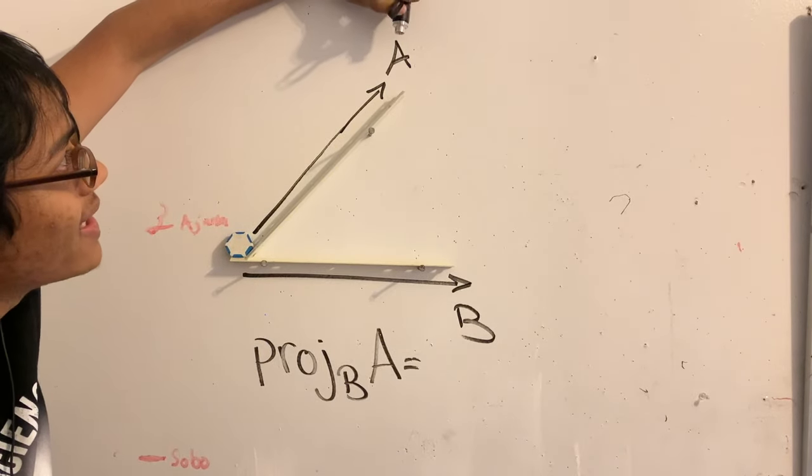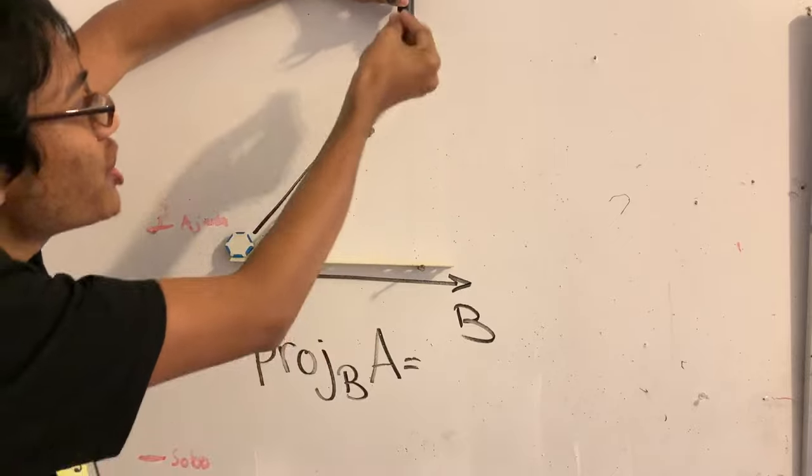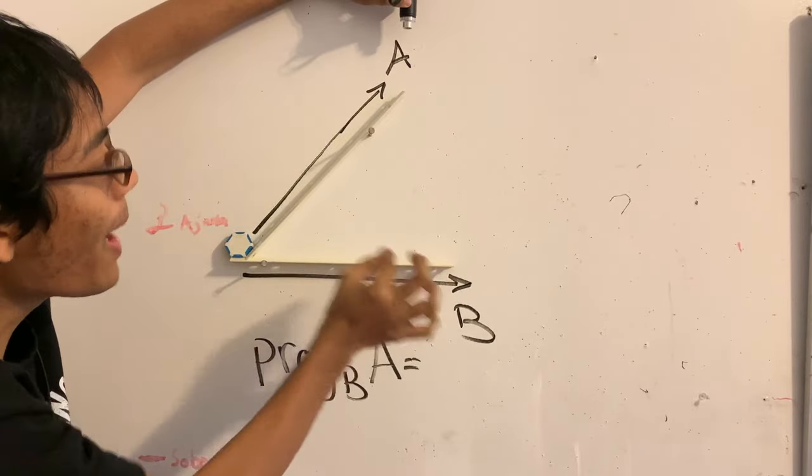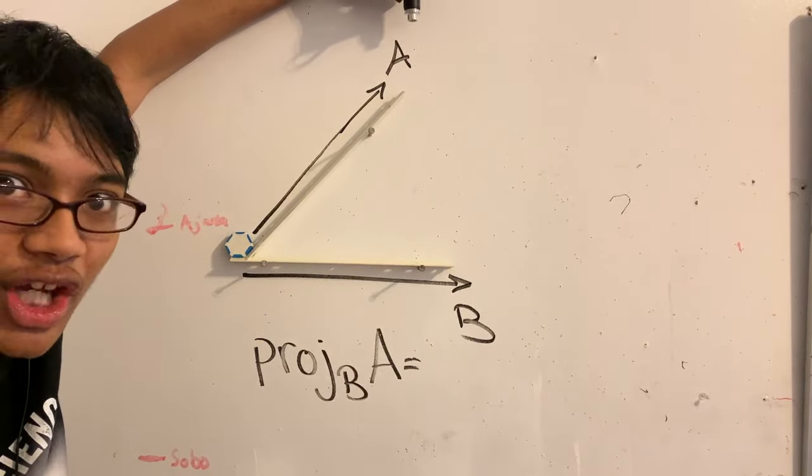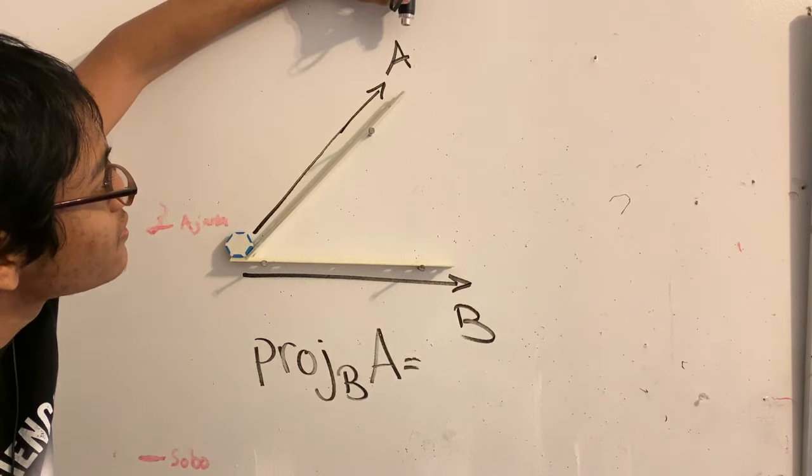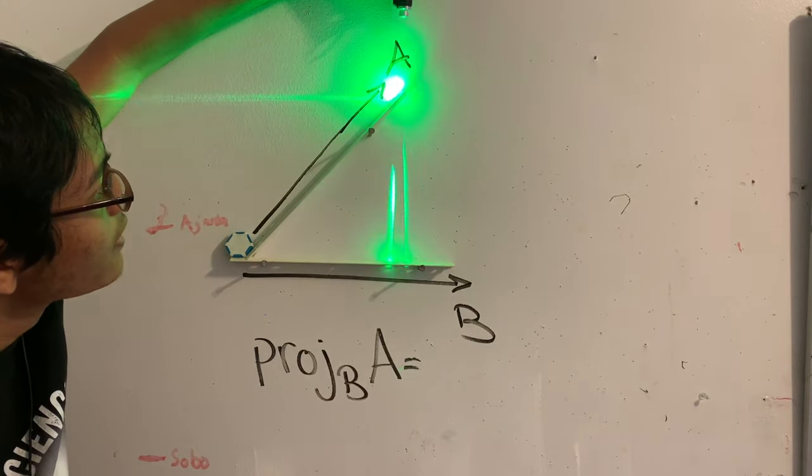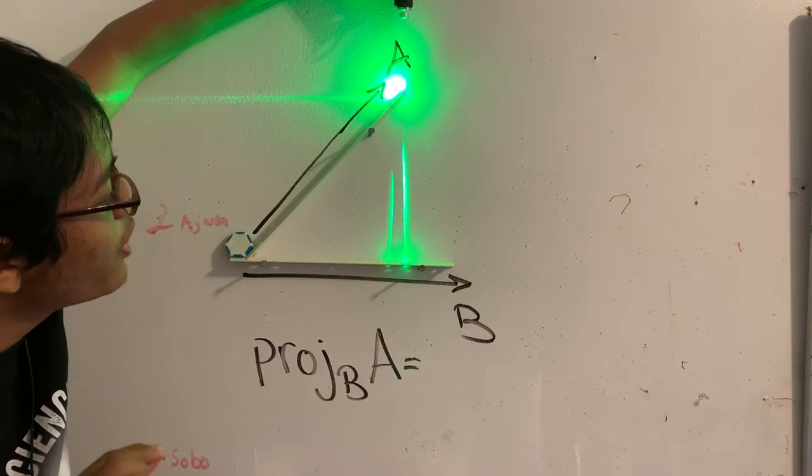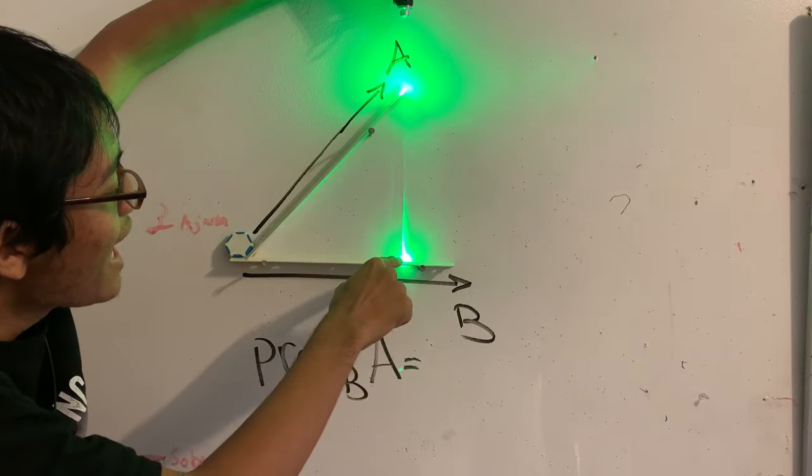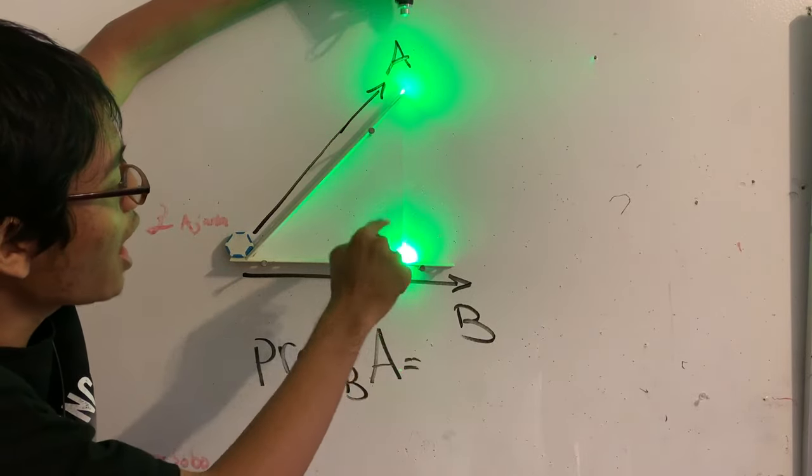Well, what's going to happen is the projection, the shadow of vector A is going to pop up on vector B. Let's check it out. Enough talk. And there you go. That right there is the projection of vector A onto vector B.